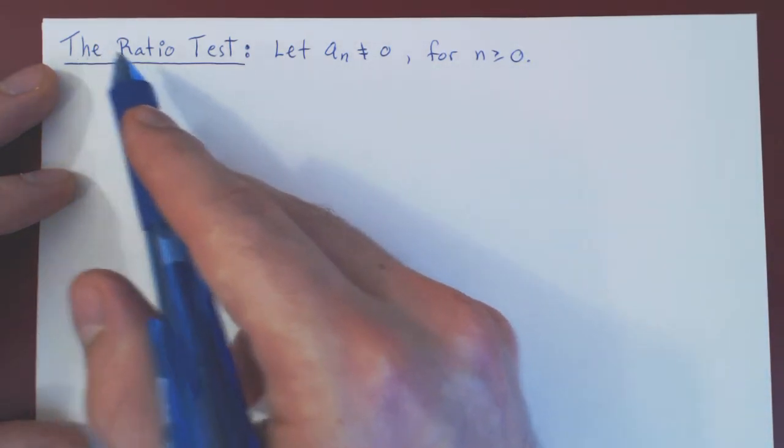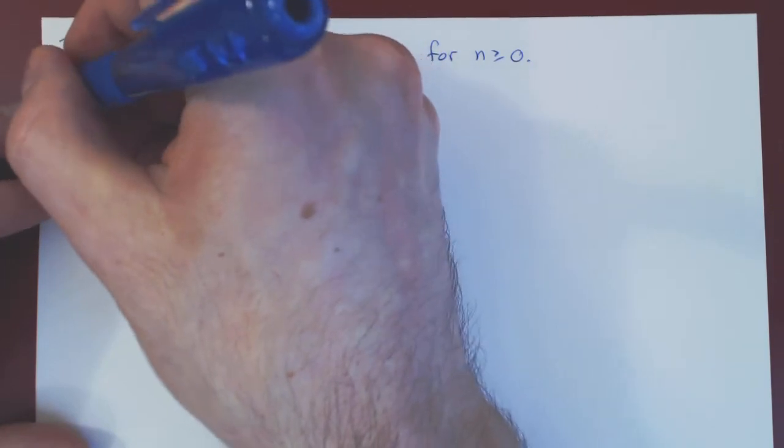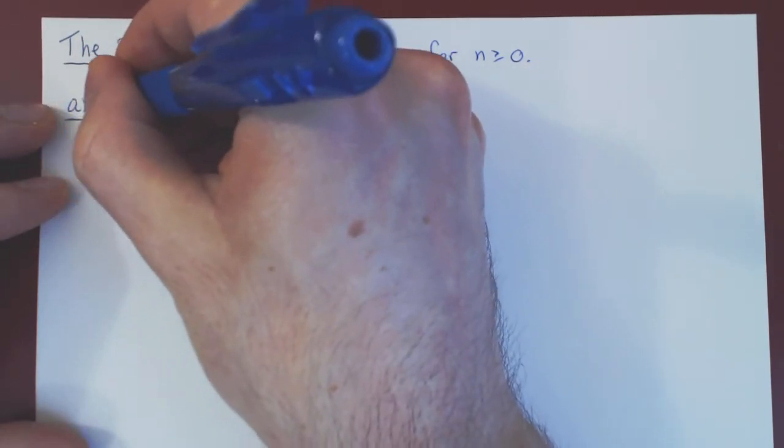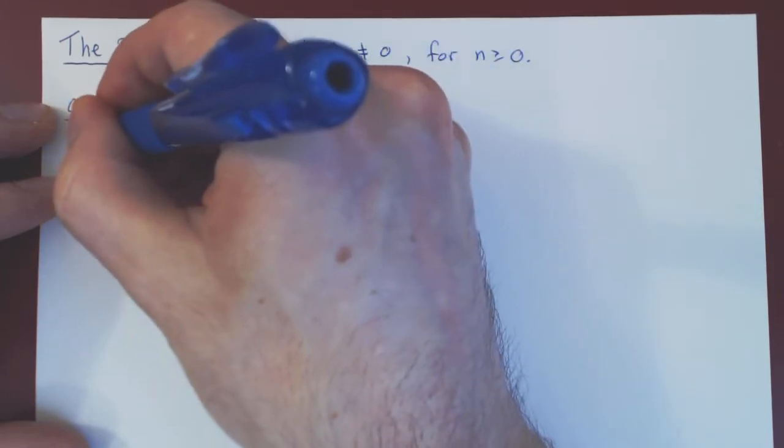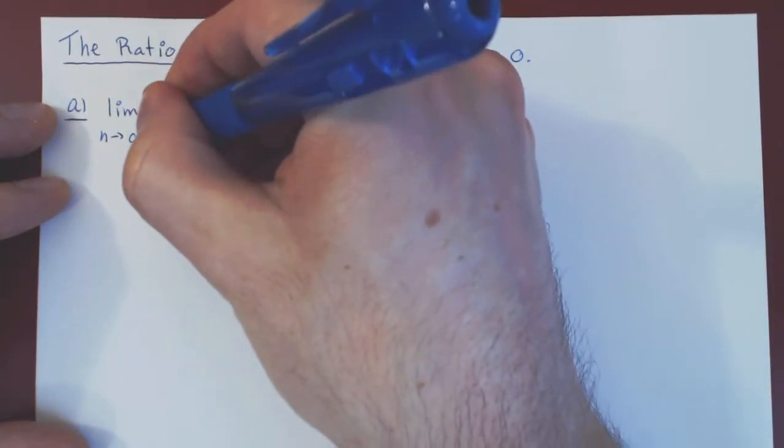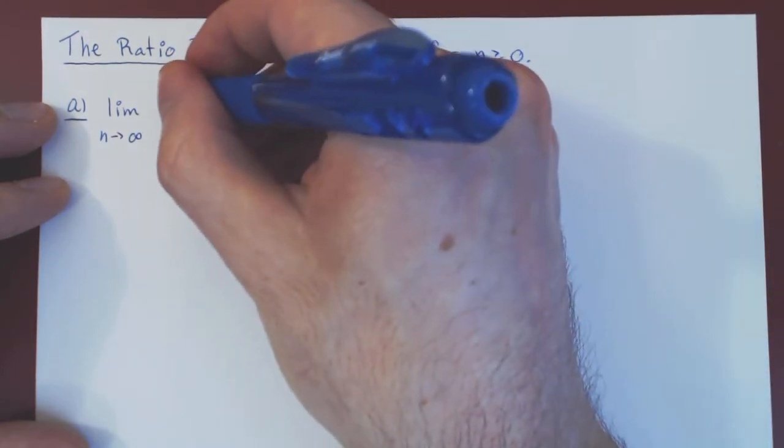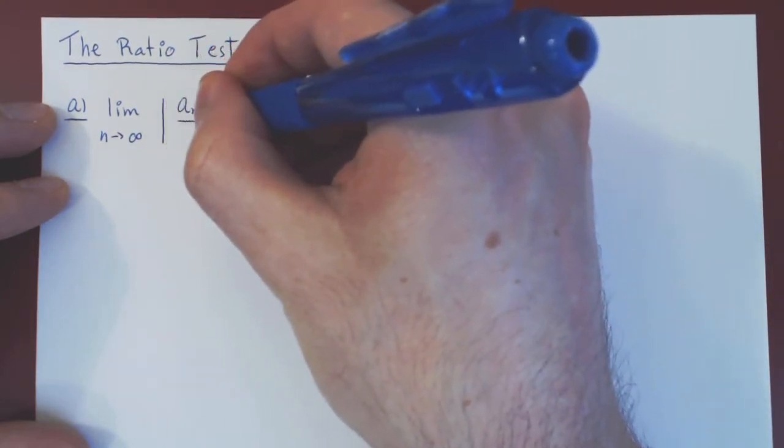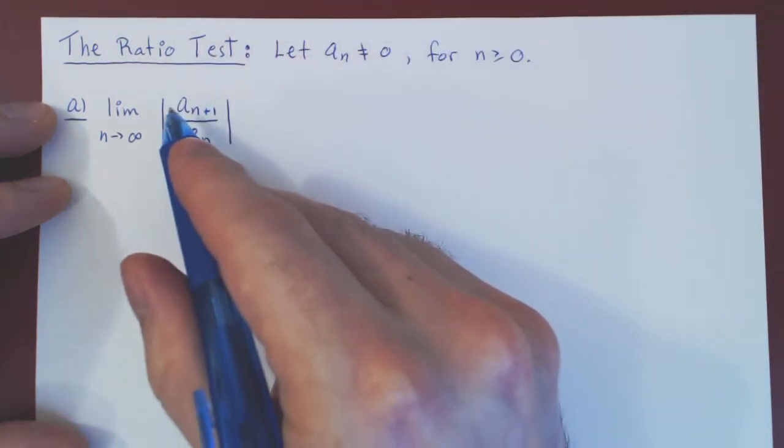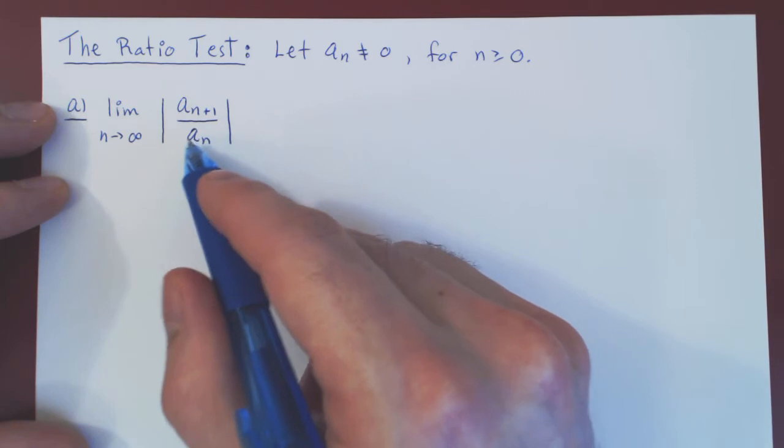We'll break down the ratio test into three parts. Part a: we look at the limit in each part, as n tends to infinity, of |an+1 over an| in absolute value.